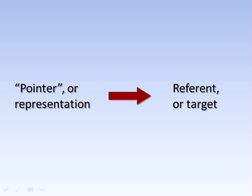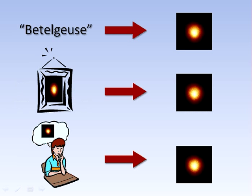The relationship between pointer and referent doesn't need to involve any spatial distance. A thought or diagram of Betelgeuse, the star, doesn't depend on how close or far it is to the actual referent.